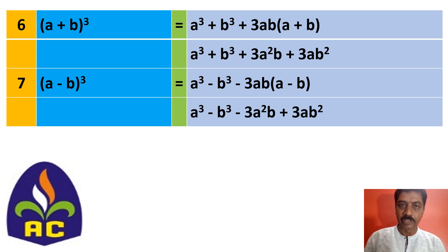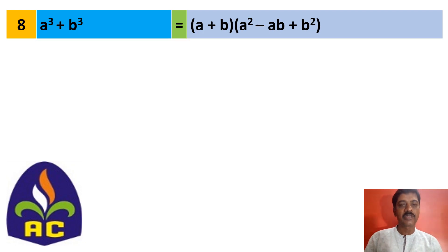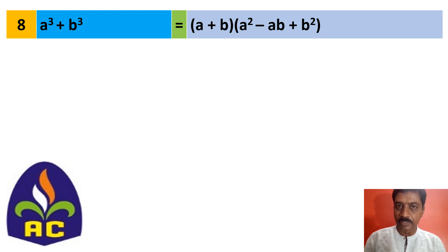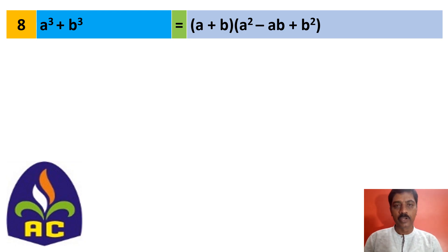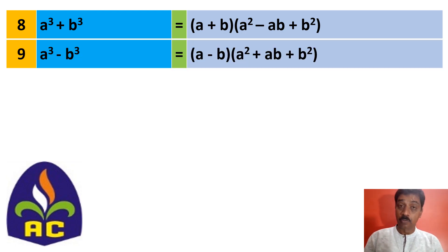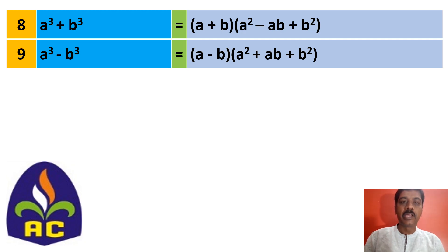The eighth identity: a cubed plus b cubed, you can write it as a plus b into a squared minus ab plus b squared. The ninth identity: a cubed minus b cubed, you can write it as a minus b into a squared plus ab plus b squared.